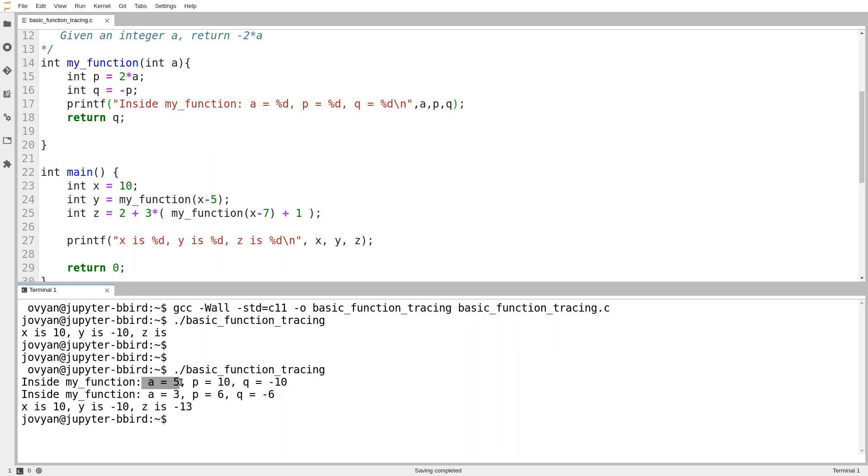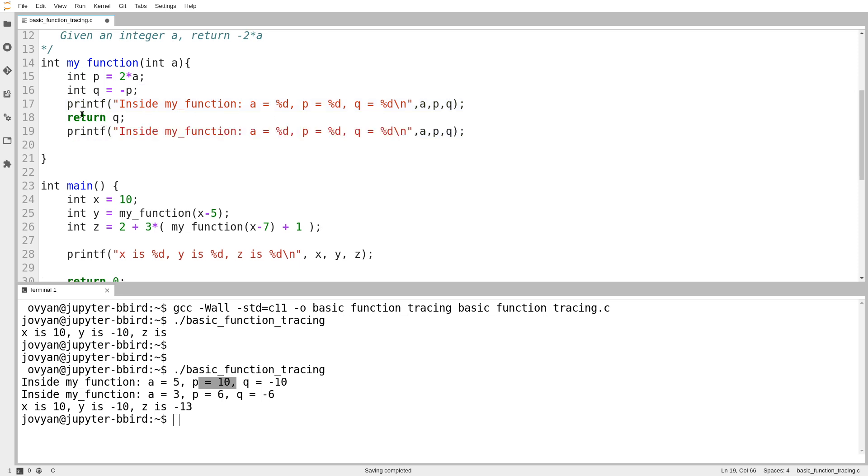But we can see the first time I call my_function, A is 5, P is 10, Q is negative 10, then A is 3, P is 6, Q is negative 6. I also want to show this. So I mentioned a minute ago, sort of ominously, whenever I hit a return statement, the function ends.